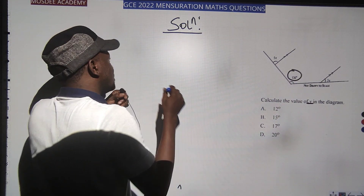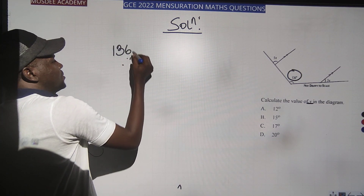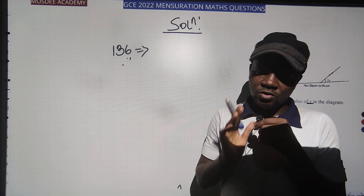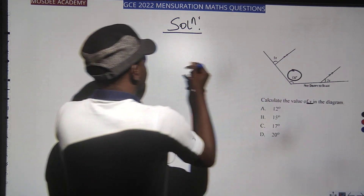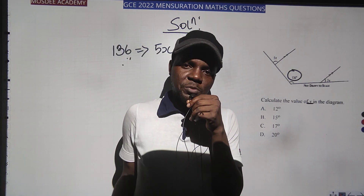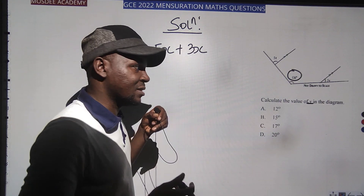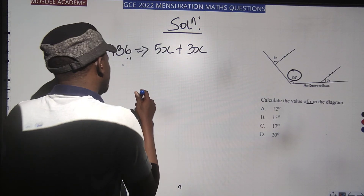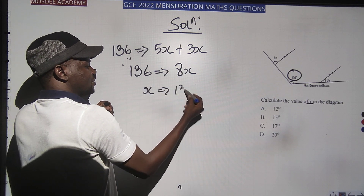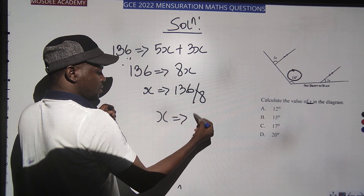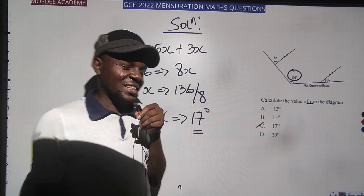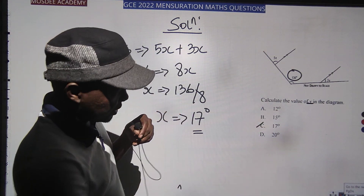So 136 equals the sum of the two extreme angles, which are 5x and 3x. That gives 136 = 5x + 3x = 8x. Therefore x = 136 ÷ 8. I believe the answer is 17° because 8 times 17 is 136. You can see my logic — use the middle angle theorem for inside-the-line configurations like this.